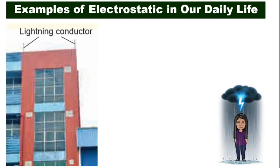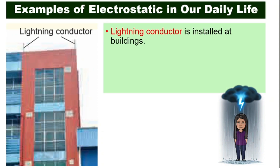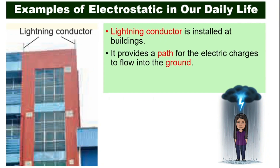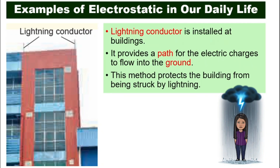If electrons on their way to the earth strike a building, that would be dangerous. So lightning conductors, like the one in this picture, are installed on buildings. They provide a path for the electric charges to flow straight into the ground, without damaging the building. This is how we protect our buildings from being struck by lightning.